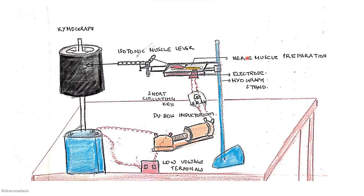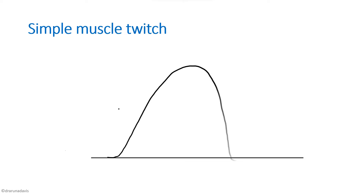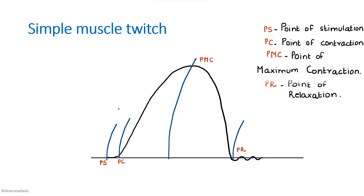The first experiment is the simple muscle twitch. To draw the graph, you first draw the baseline, then draw the simple muscle curve, and mark the points: point of stimulation, point of contraction, point of maximum contraction, and point of relaxation. One thing to remember when drawing the simple muscle curve is that we should also draw the time tracer.